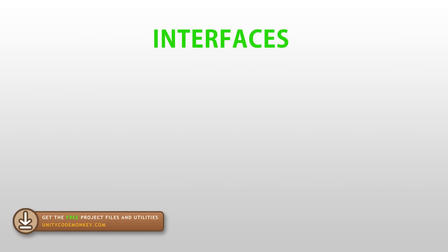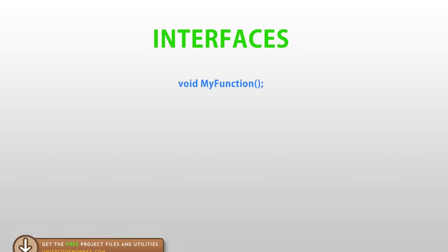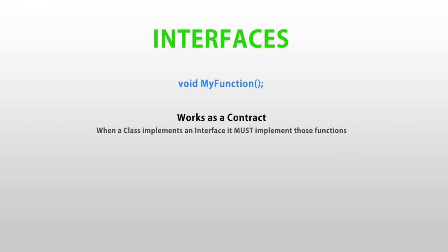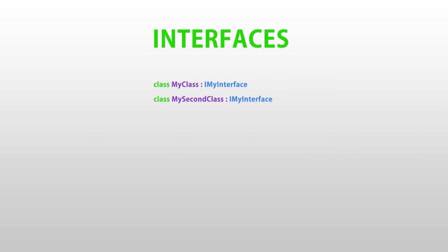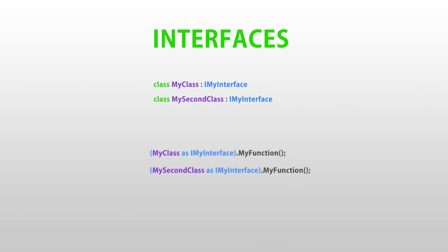Interfaces are one of the main features of C# and writing object-oriented code. Essentially they allow you to define functions and properties but without any implementation. The interface works as a contract — it ensures that when a class implements that interface, they must implement those functions. This allows you to have several different classes that can be used the same way by using a common interface, and you don't care what else that class is doing. Maybe it's a tiny class that only has the interface functions implemented, or maybe it's a mega class with a thousand lines of code. When you use it as an interface you can guarantee that it will have those functions regardless of what the rest of the class is doing.